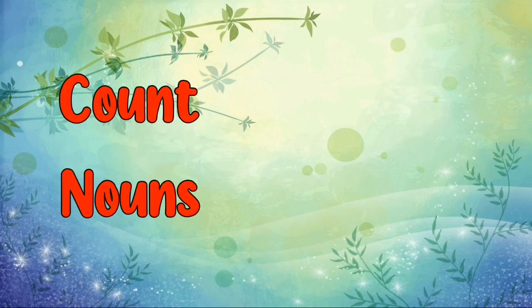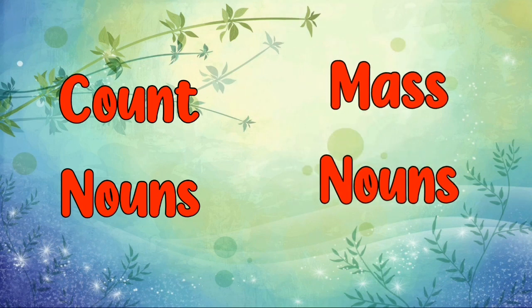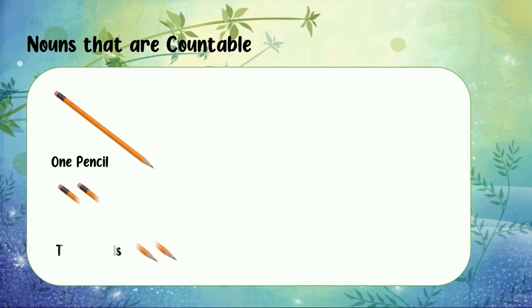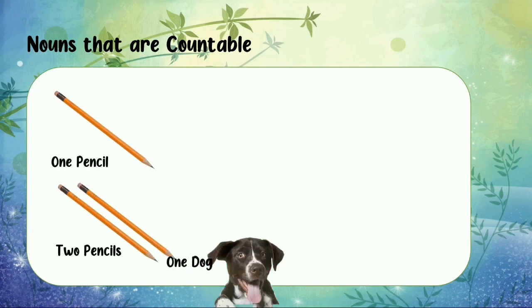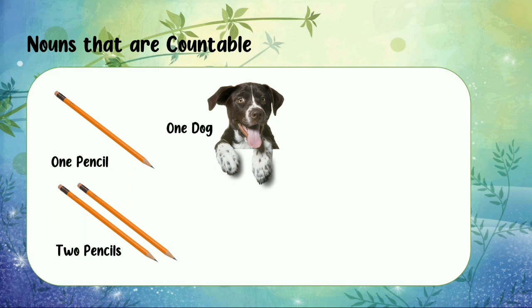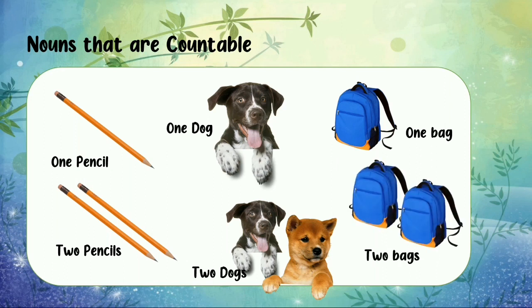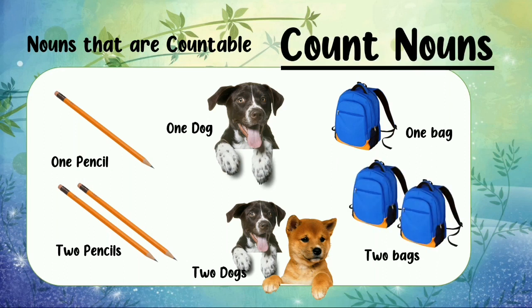Nouns can typically be divided into two categories: the count nouns and mass nouns. Nouns that are countable, like one pencil, two pencils, one dog, two dogs, one bag, two bags — they are called count nouns.